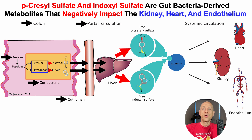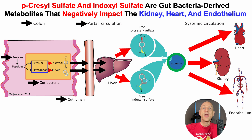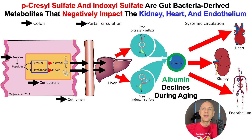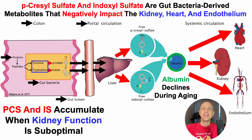One way to reduce circulating levels of these metabolites is by binding to albumin, which is potentially important because free levels of p-cresyl sulfate and indoxyl sulfate in blood damage the liver, heart, and endothelium. Unfortunately, albumin levels decline during aging, which is one way that levels of these metabolites increase in blood during aging. Another factor is that the kidney is supposed to remove these metabolites, but kidney function also declines during aging.